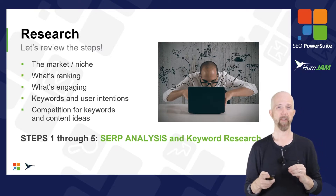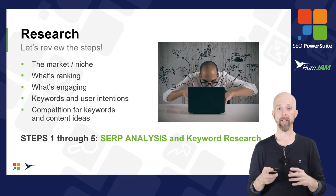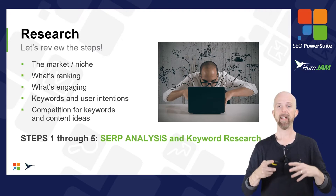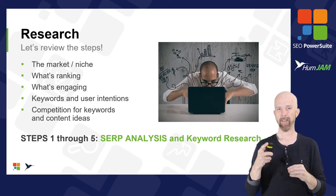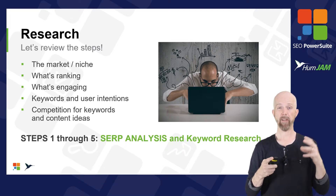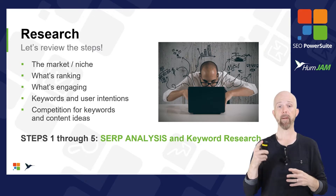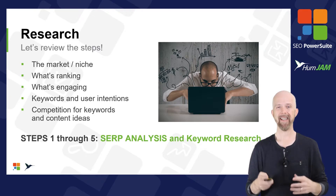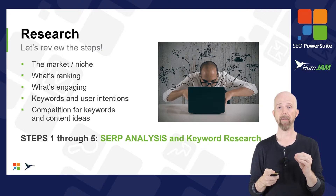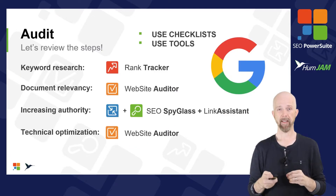Let's start with Research and review the steps. We've already done this in the previous videos — looking at the market, seeing what's ranking, looking at the content to see what's engaging, looking through the keywords to see where the user intentions are, and looking at competitors to see if there are any ideas. These are steps one through five. We do a SERP analysis and keyword research in this phase.